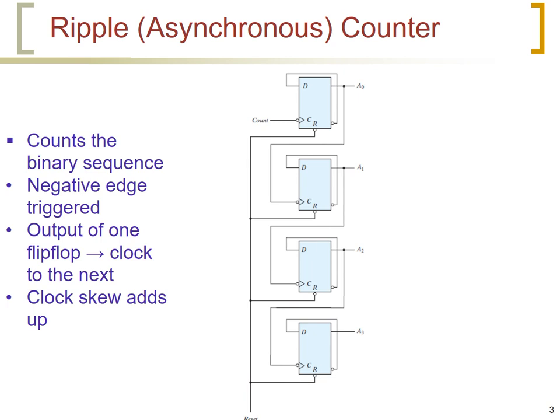The Binary Ripple counter, which we also sometimes call an asynchronous counter, is not synchronous because it does not use a clock. It counts the binary sequence from 0 up to 15 and back to 0, and so forth. The counter presented here is negative edge triggered, which means when the clock or input goes from 1 to 0, the counter will count and increase by 1.